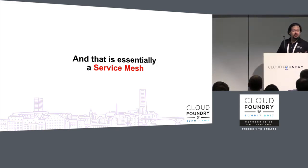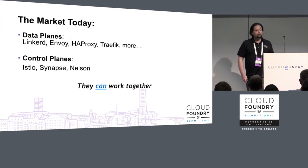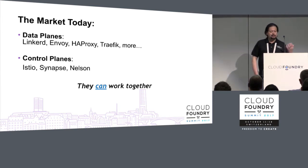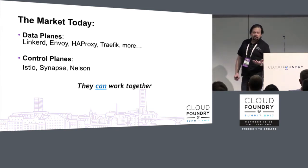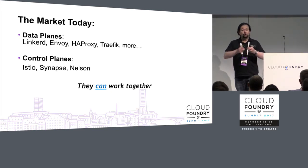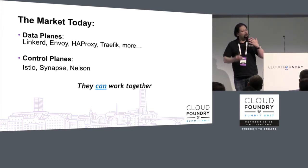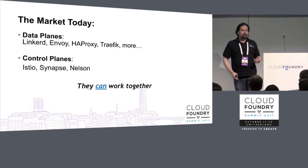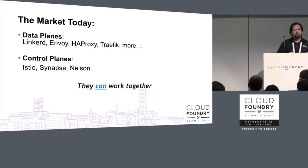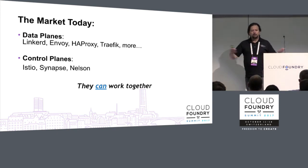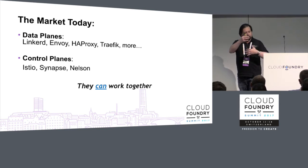A service mesh is as simple and as complex as that — there's a lot of intelligence that goes behind the scenes. In the data plane world today you have things like Linkerd, Envoy, HAProxy, and Traefik — they manage connections really well, are all efficient, and do one thing well. In terms of control planes, you have Istio, Synapse from Airbnb, Nelson, and others popping up. Nelson is more Git-centric. You have different systems trying to position themselves within this space.